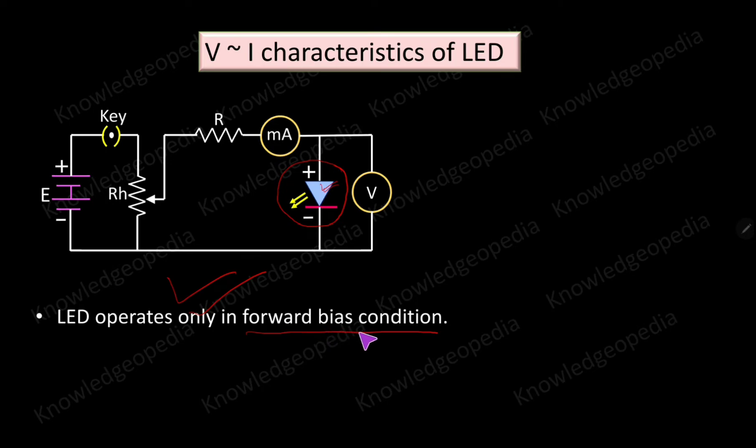Forward bias condition means the p-side of the diode should be connected to the positive terminal of the battery and n-side of the diode should be connected to the negative terminal of the battery. Here this is the p-side and this p-side is connected to the positive terminal of the applied voltage source. Here this is the n-side and n-side is connected to the negative terminal of the applied source.